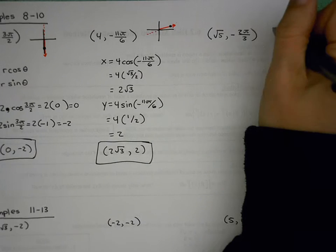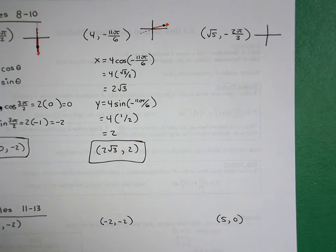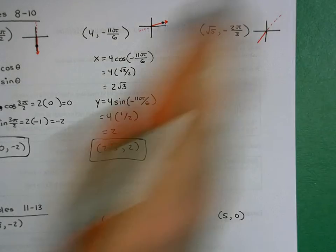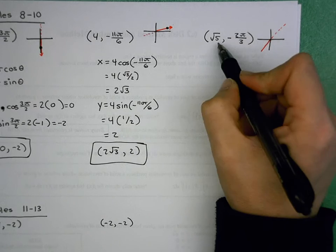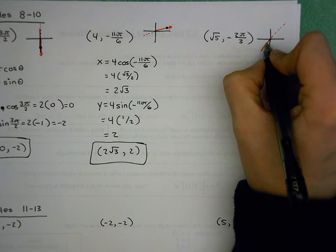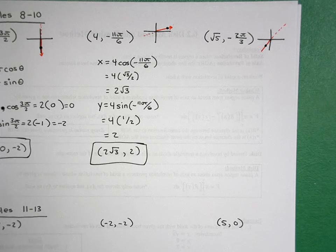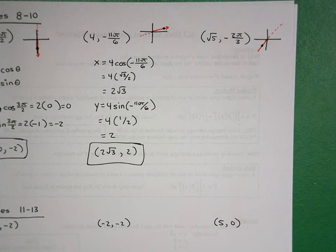Last of this set: we have (√5, −2π/3). Quick sketch — where would that radial line be? It'll be in the third quadrant. √5 is positive so we're going along that radial line. √5 is a little bit more than 2 but definitely less than 3, since 2 = √4 and 3 = √9.